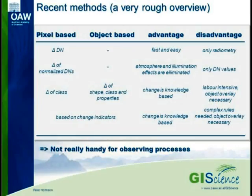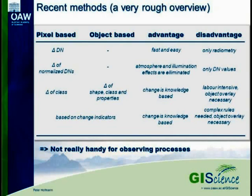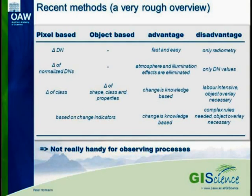Another technique is to work on change indicators, which is rather for map updating. You have different time slices and then look into the differences or look for indications where something might have changed, which is also knowledge-based and relatively complex — you need complex rules. This is a method for road updating or updating maps, where an operator gets an idea something might have changed but still has to look into the image and map the real change. All these techniques are not really handy for observing or understanding processes or using them for modeling or predictions.